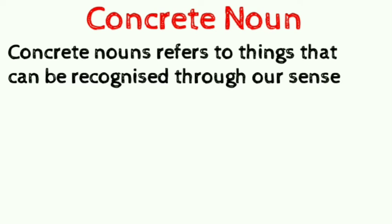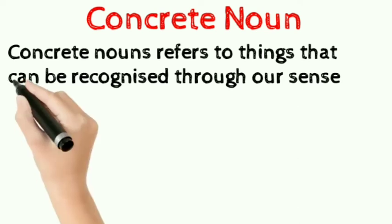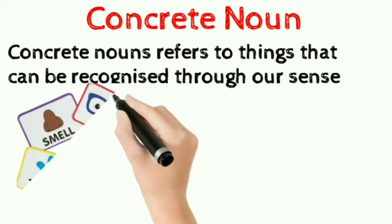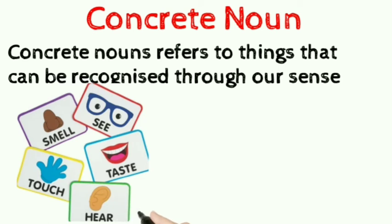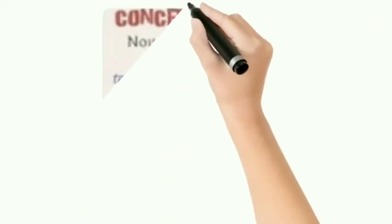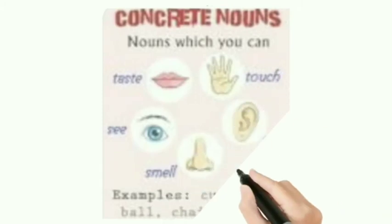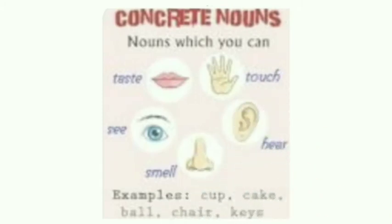Now let's go with concrete nouns. Concrete nouns refer to things that can be recognized through our five senses. Concrete means existing in material and physical form — things you can experience with your five senses.